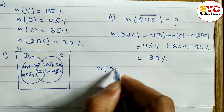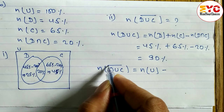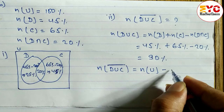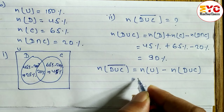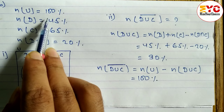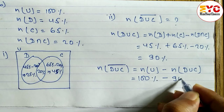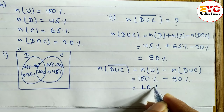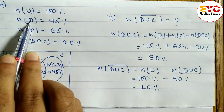n(D ∪ C) complement — the formula is n(U) minus n(D ∪ C). To find a complement, always subtract from n(U). n(U) is 100 percent, and n(D ∪ C) is 90 percent. So: 100 minus 90 equals 10 percent. So 10 percent of people do not like the Dashain and Chhath festival.